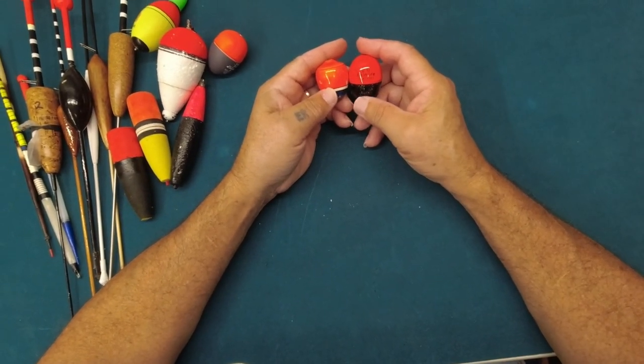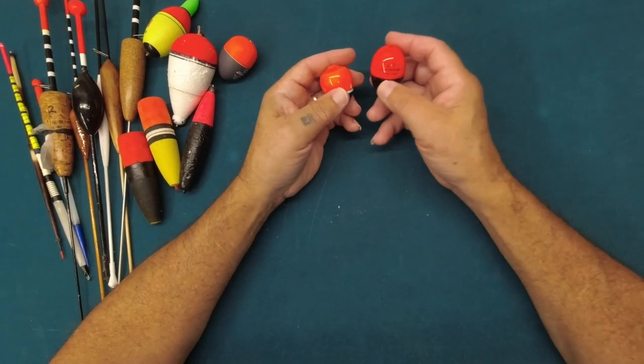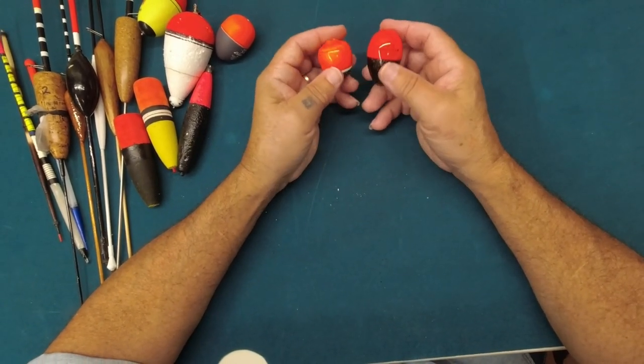These two I use for catching drummer off the rocks. When I don't want to, if it's too rocky and you're getting too many snags, I put one of these on and I'll show you how to rig that.